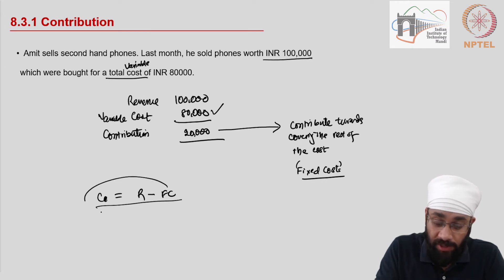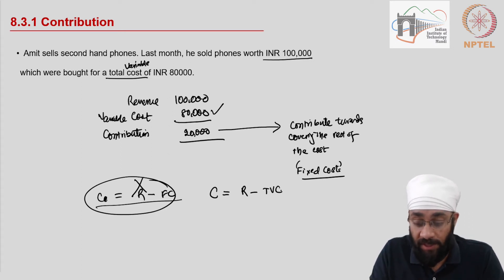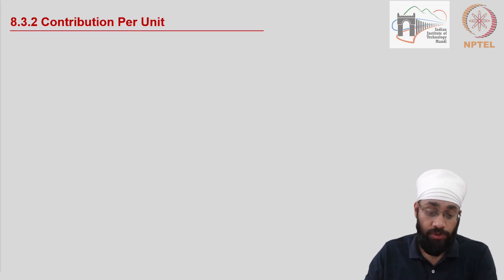So rather than using this, we use this: contribution is equal to revenue minus the total variable cost. If this equation, if this is positive, then you start a business, then you continue a business. If this is not positive, if you are spending more on variable cost and contribution is negative, you have no money left to cover the fixed cost. You can't survive in the business. That is the concept of contribution.